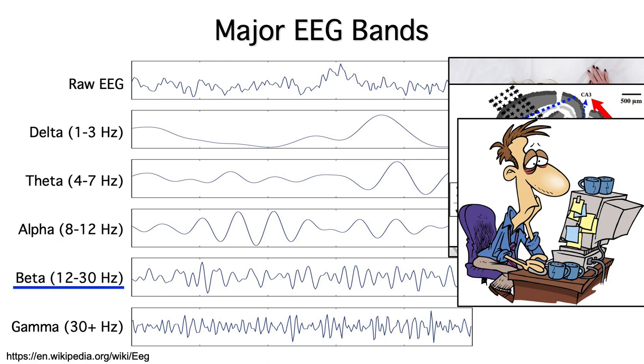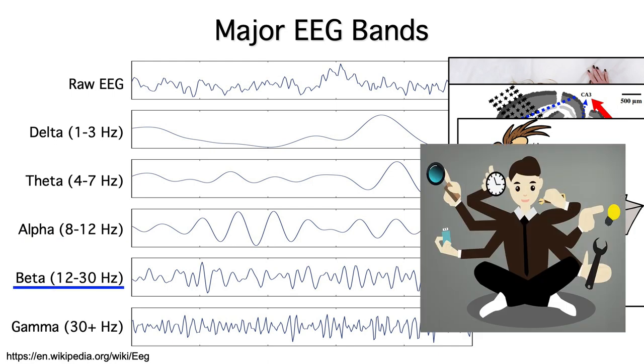Beta band oscillations typically occur when someone is mentally active, often when there is very little alpha. The beta band oscillations tend to be much smaller and less regular than the alpha band oscillations.